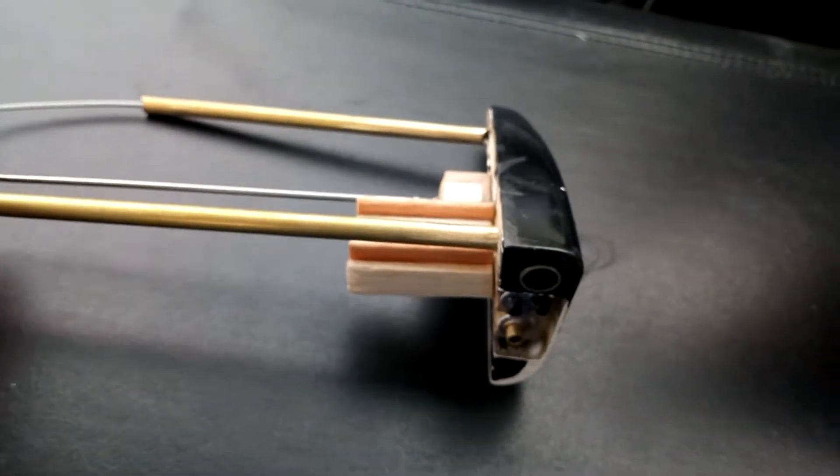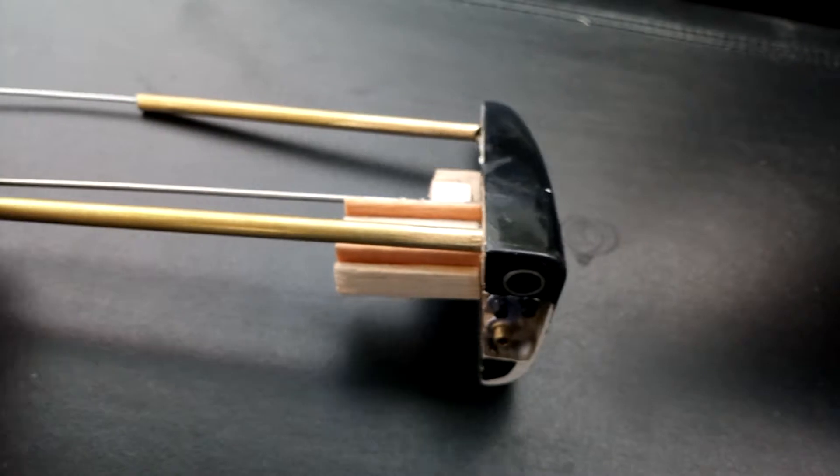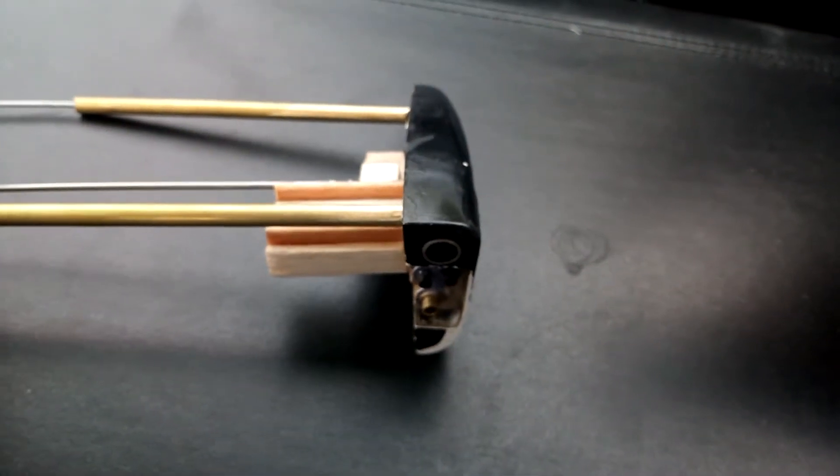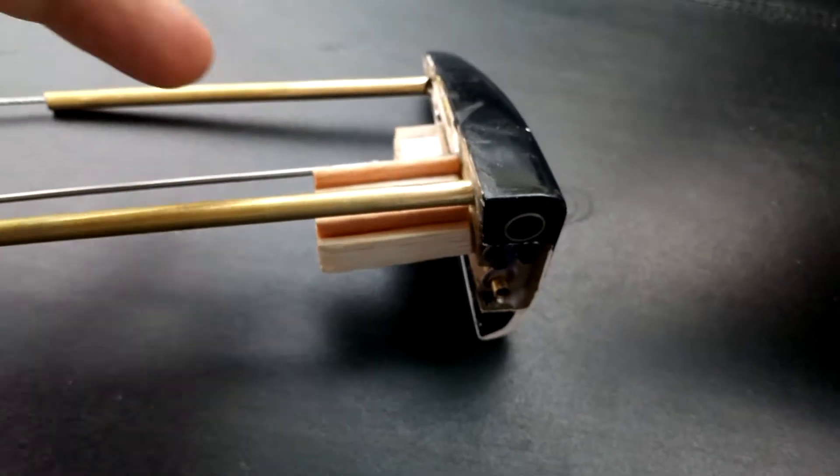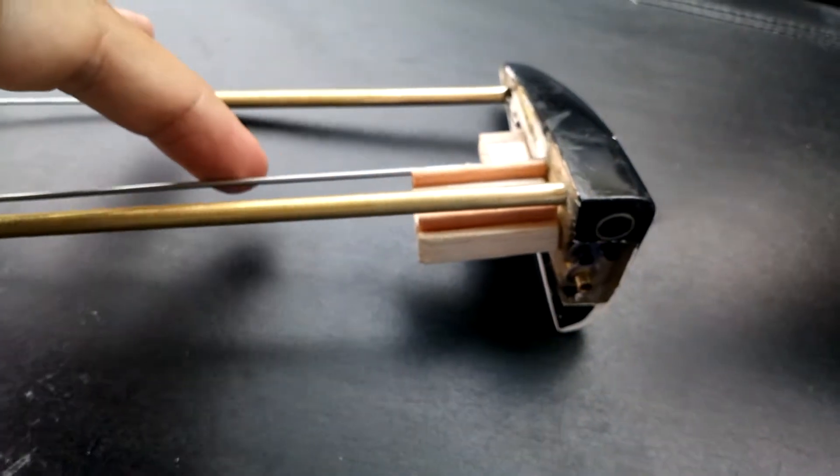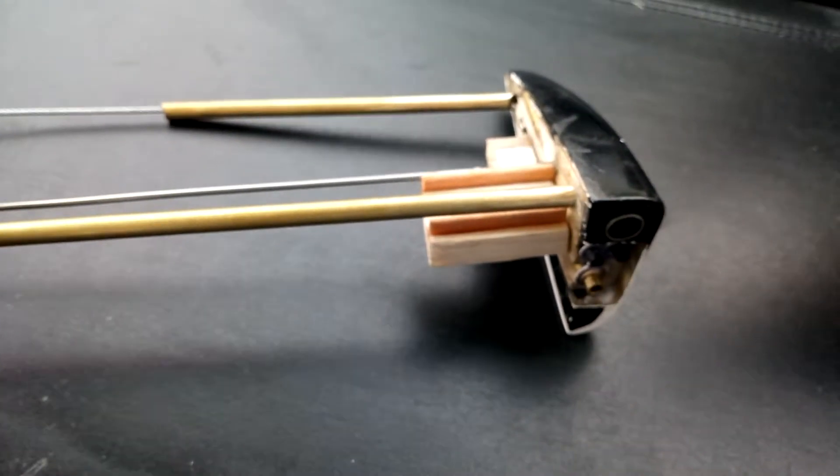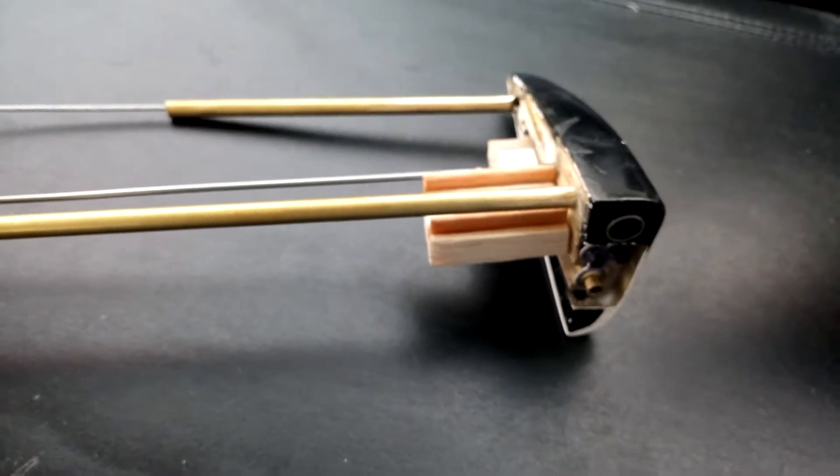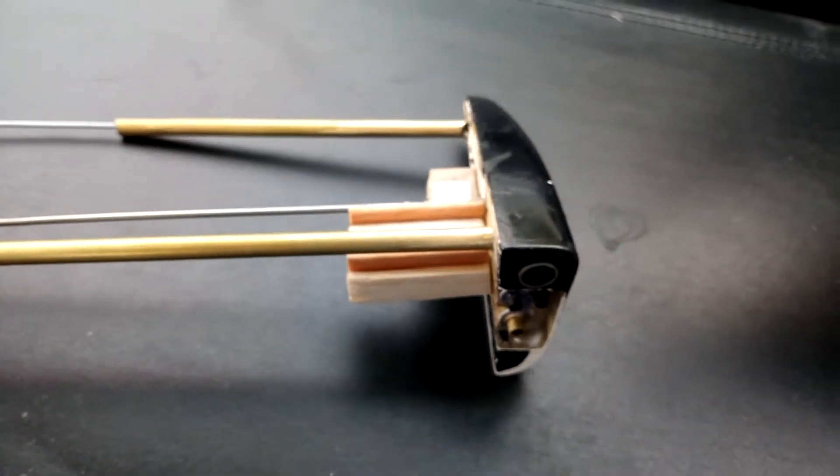So the overall movement of the nacelle will be like that, in and out. This steel rod will also run into the fuselage to a separate servo which will control the push and pull of the nacelle in and out.